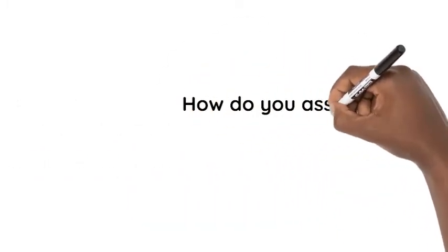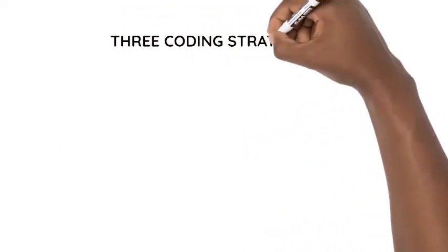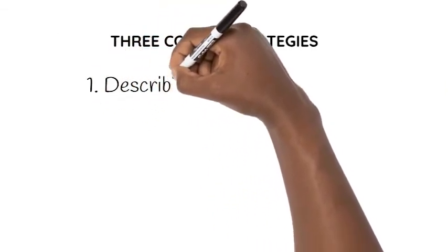How do you assign labels to them? I think there are three main ways of developing codes or assigning labels to significant information that you identify in the transcript.